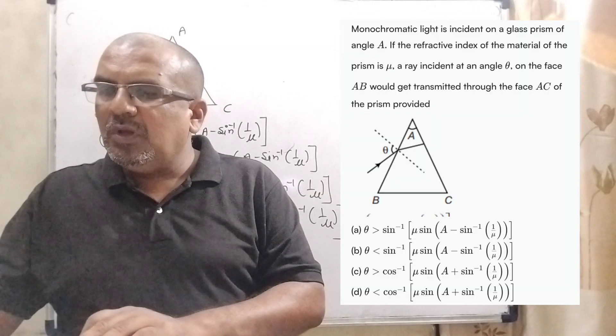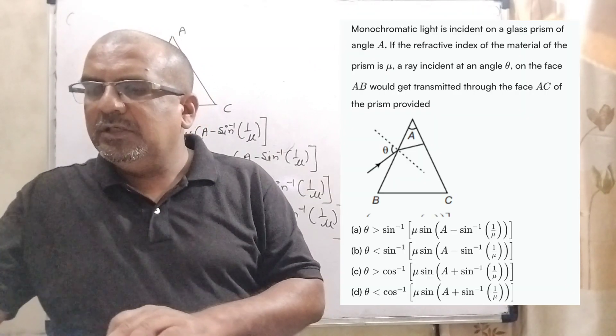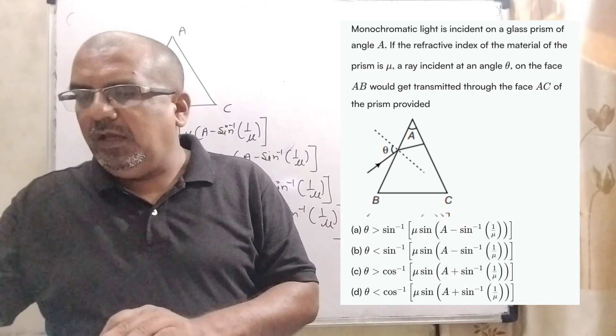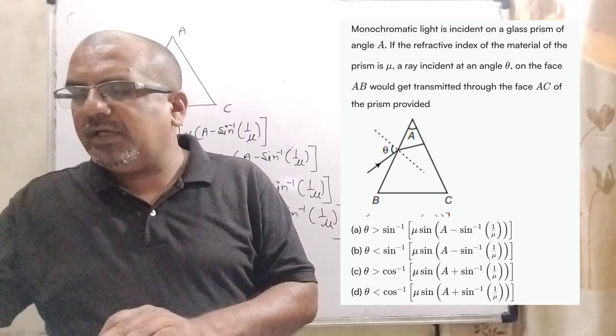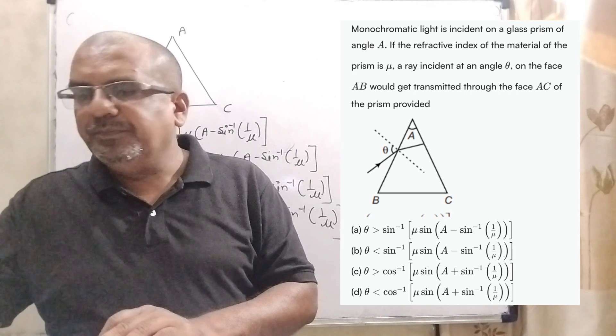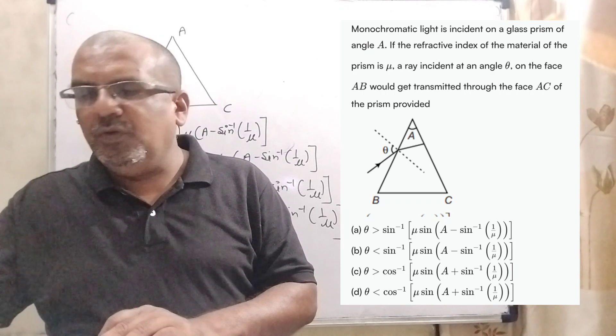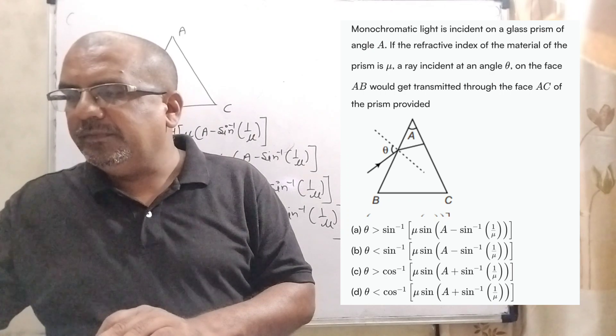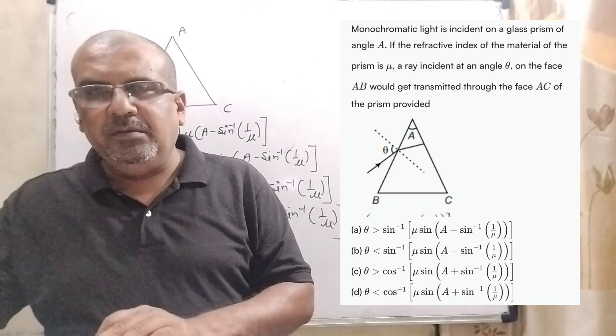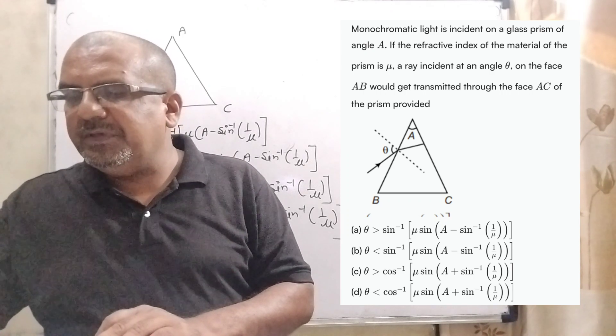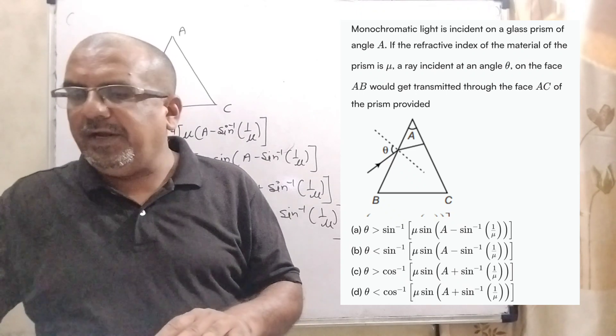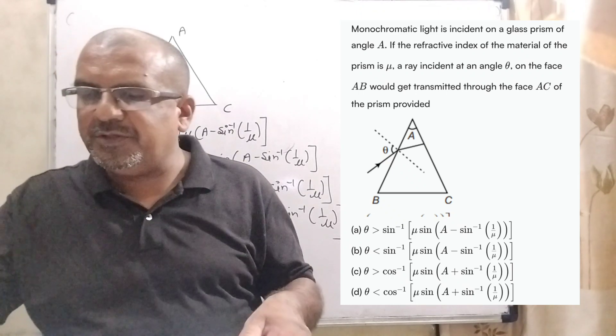Now here is the question. Monochromatic light is incident on a glass prism of angle A. If the refractive index of the material of the prism is mu, a ray incident at angle theta on the face AB would get transmitted through the face AC of the prism provided.